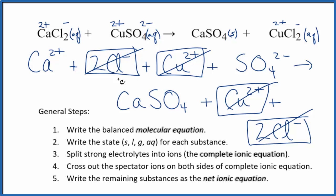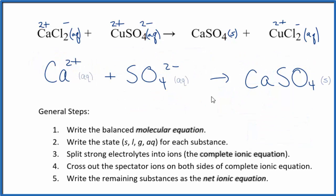Write the states. We'll have our net ionic equation. So this is the balanced net ionic equation for CaCl2 plus CuSO4. You'll note, charge is conserved.